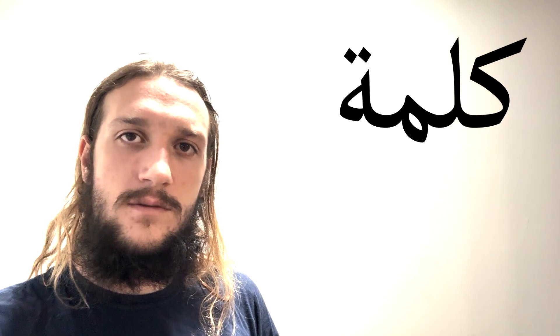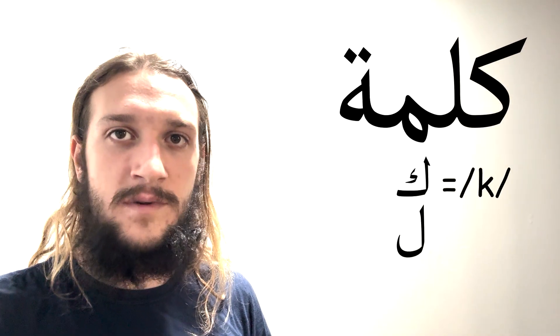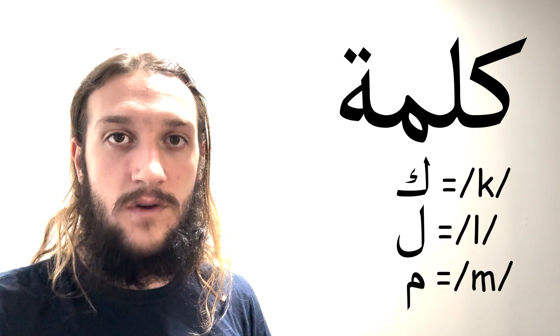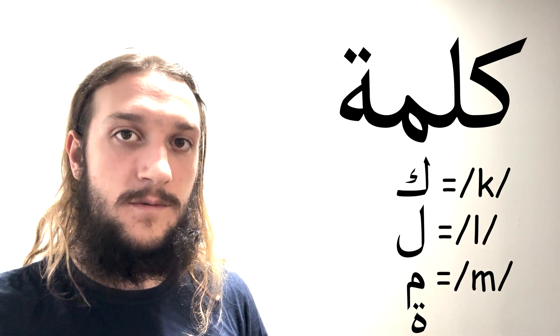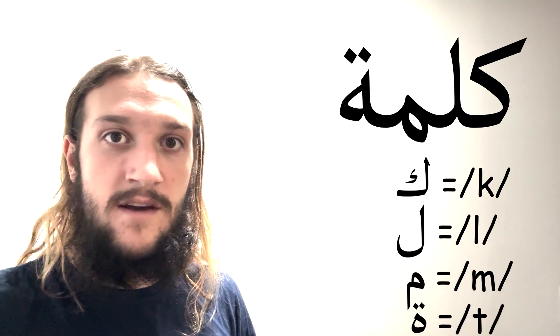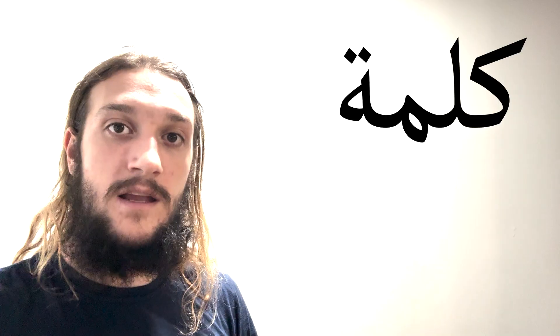Take a look at this Arabic word. Reading it from right to left, we've got kaf, which makes a K sound, lam, which makes an L sound, mim, which makes an M sound, and tamarbuta, which makes a T sound. So you would say this word doesn't have any vowels, right? In reality, this word, which is actually the Arabic word for 'word,' is pronounced kalimat. There's definitely some vowels in there.